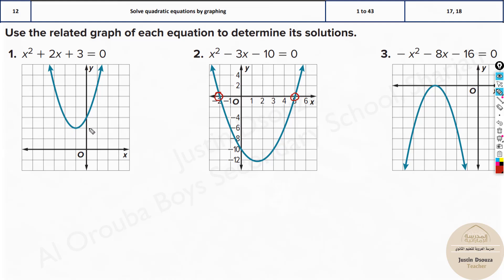Look at this first problem — it doesn't touch the x-axis. There's a distance, which means there are no possible solutions for this particular graph. Over here you can see it touches the axis on exactly one point, so there is only one solution. But for the second question it crosses at two points, so there are two solutions.